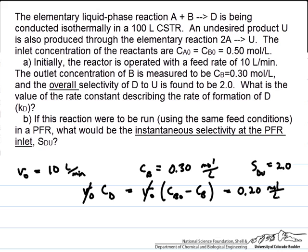Now that we know how much D is formed, and given the overall selectivity of D to U of 2.0, we know that twice as much D is formed as U. Therefore the concentration of U formed is 0.10 moles per liter.